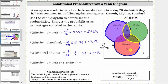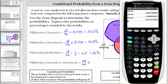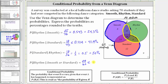These are the students that competed in smooth or standard and also rhythm, which means the probability a student competed in rhythm given they competed in smooth or standard is 29 out of 62, which is approximately 0.468, which is equal to 46.8%. I hope you found this helpful.